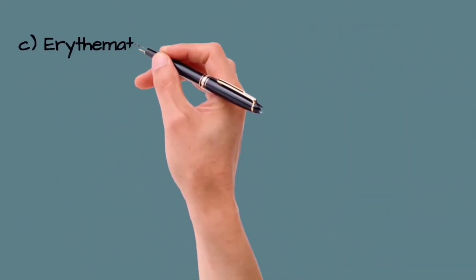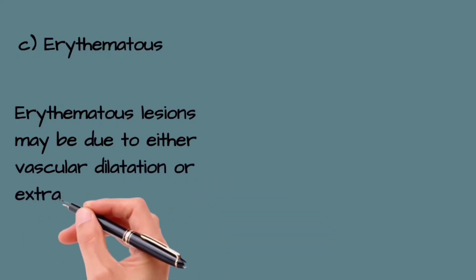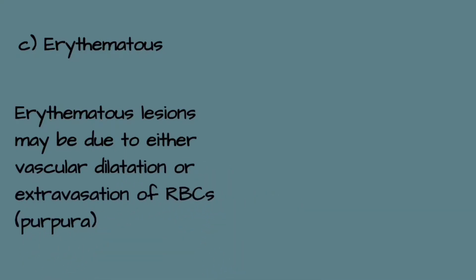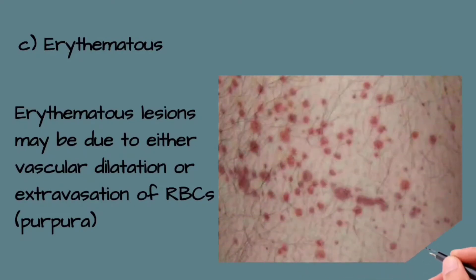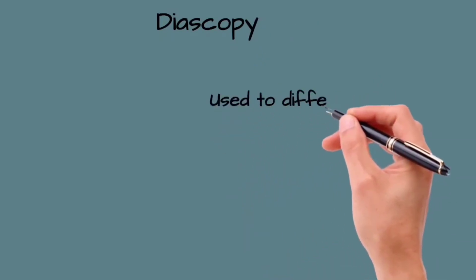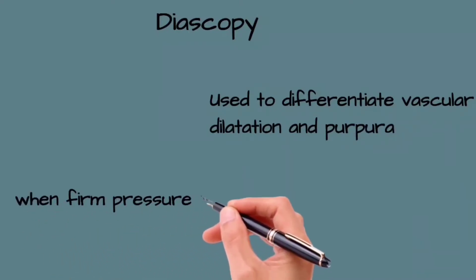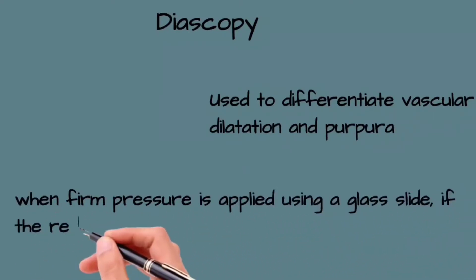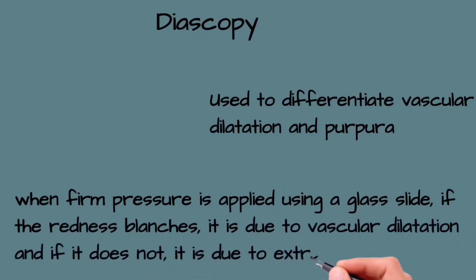Erythematous lesions may be due to either vascular dilatation or extravasation of RBCs, called purpura. Diascopy is used to differentiate between the two. When firm pressure is applied using a glass slide, if the redness blanches it is due to vascular dilatation, and if it does not, it is due to extravasation of RBCs.